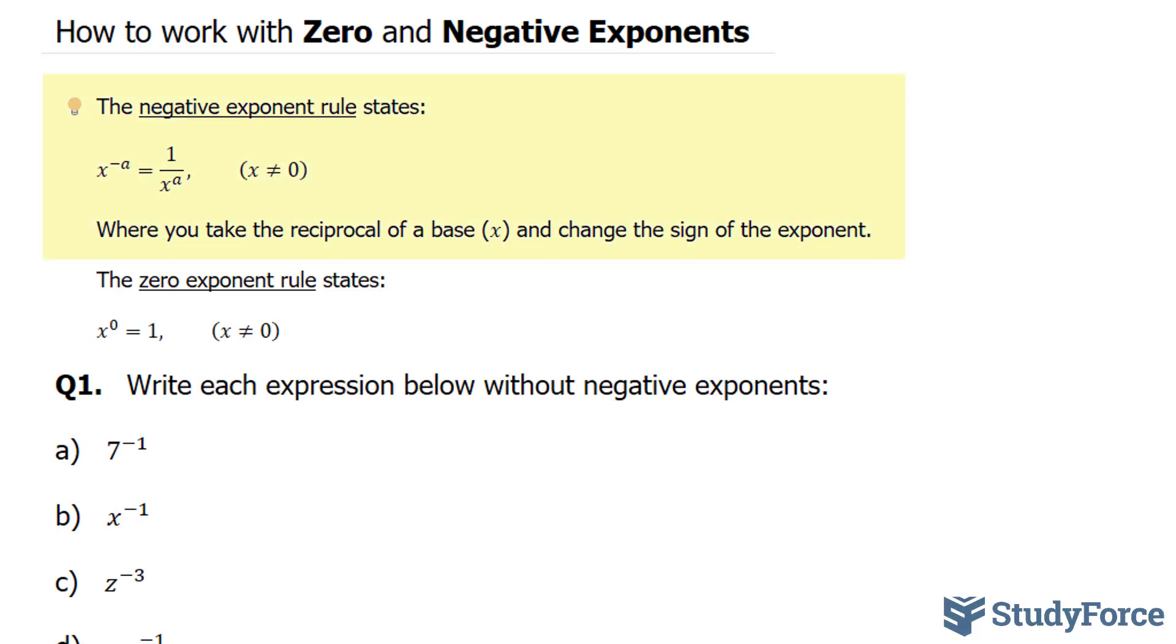The negative exponent rule states that if we have, let's say, x to the power of negative a, we reciprocate the base, where it's 1 over x, and we switch the symbol of the exponent. In this case, it was negative, and it becomes positive.